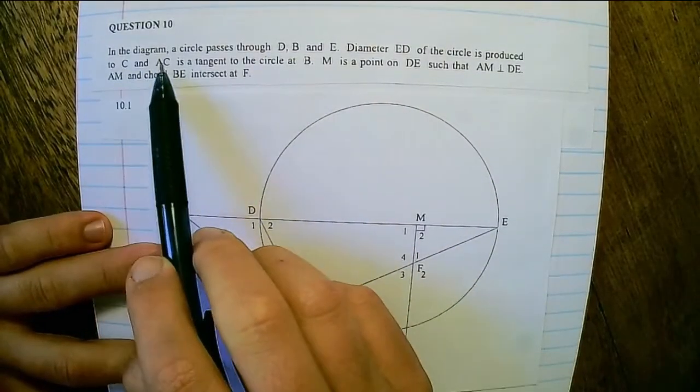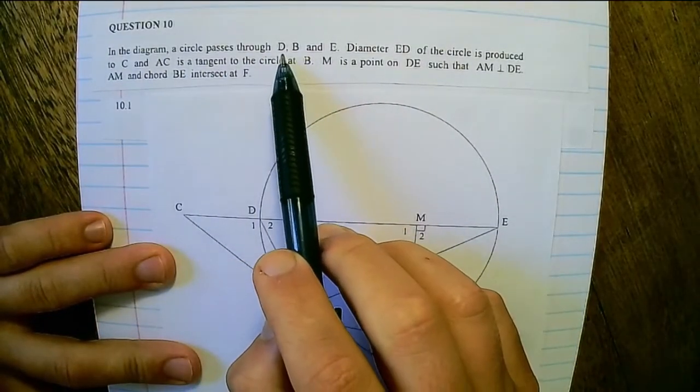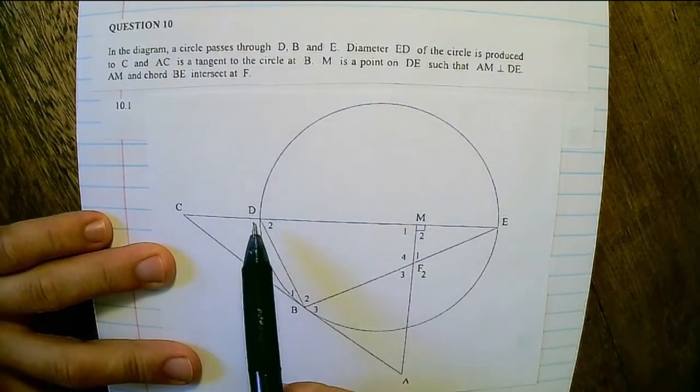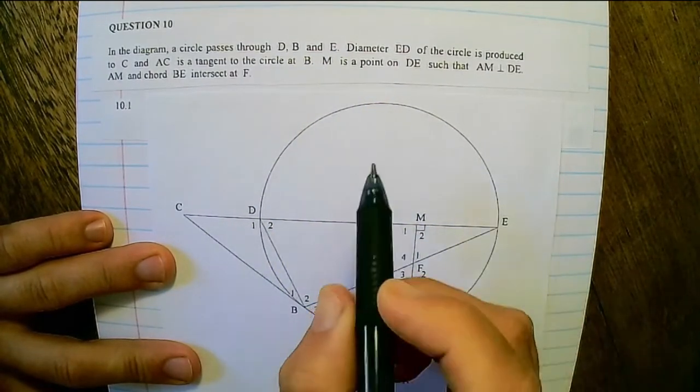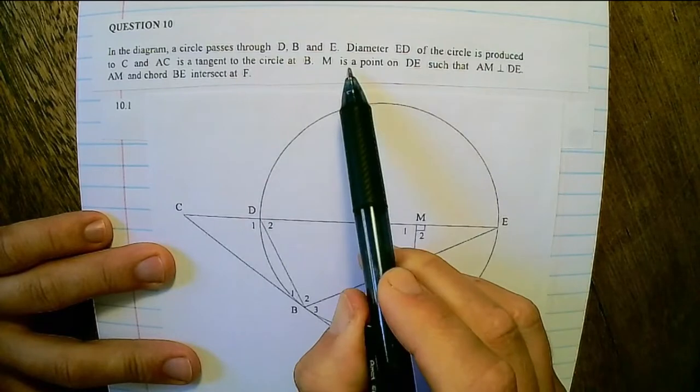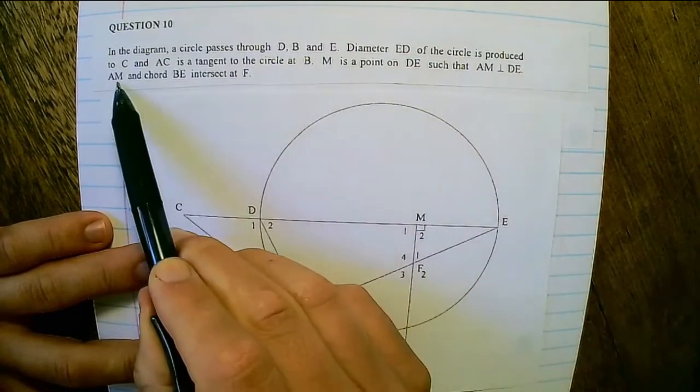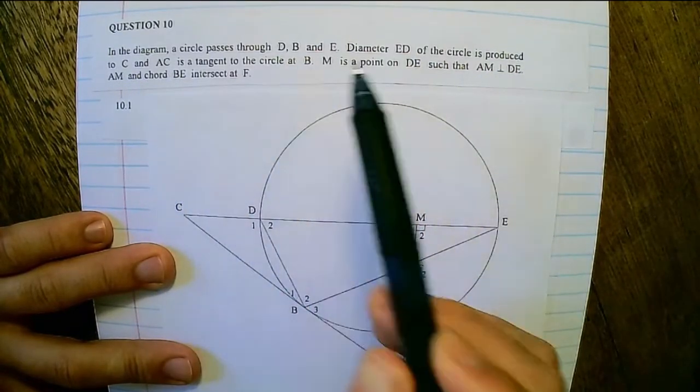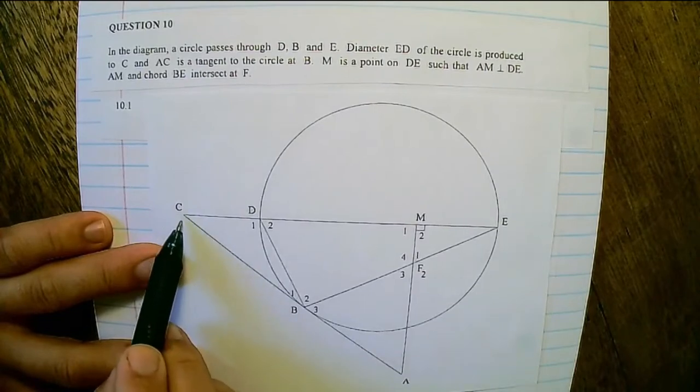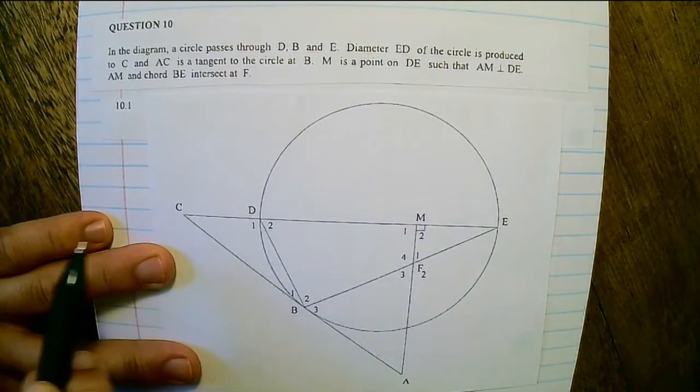Question 10. In the diagram, a circle passes through D, B, and E. So D, B, and E are points on the circle. The diameter DE of the circle is produced to C, and AC is a tangent to the circle at B. So this is a tangent to the circle.